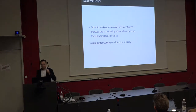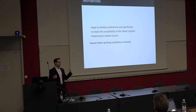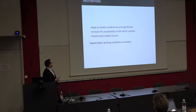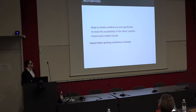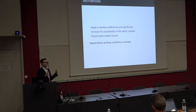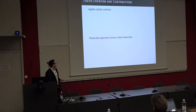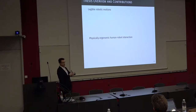This thesis was motivated by three main points. First, we wanted to adapt to worker preference specificities — every worker is unique, some are right-handed, some left-handed, and to have a robot well accepted by people, we need to account for all those specificities. In this way, we also increase the acceptability of robotic systems. But also, we have an opportunity to prevent work-related injuries, which is one of the main concerns in industry as it costs a lot of money. Incorporating robots into production lines might help prevent those injuries. At the end, what we want to achieve is simply better working conditions in industry.